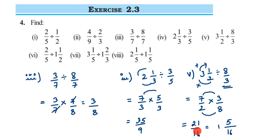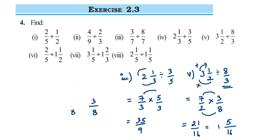If you want to convert to a mixed fraction, you can — both 21 upon 16 and 1 and 5 by 16 are correct answers. Next, the sixth question.